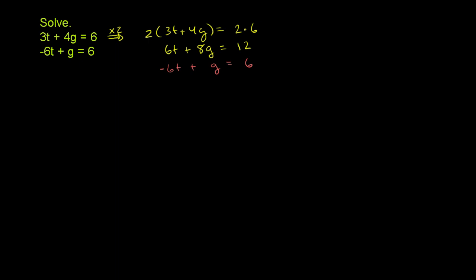Now, think about what happens if I were to add these two equations. And remember, I can do that, because I'm essentially adding the same thing to both sides of this top equation. Or you could say I'm adding the same thing to both sides of this bottom equation. Because the other equation is an equality. This negative 6t plus g, it is 6. So if I'm adding 6 to 12, I'm really adding the same quantity to the left-hand side. That's why I can do it.